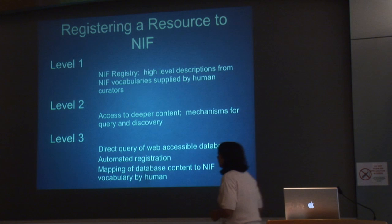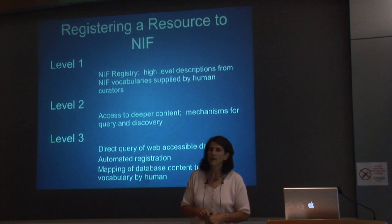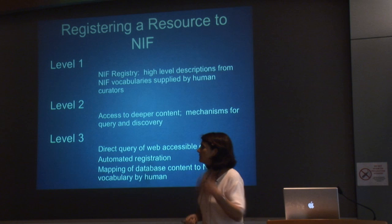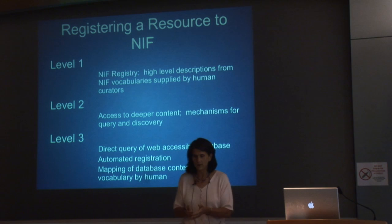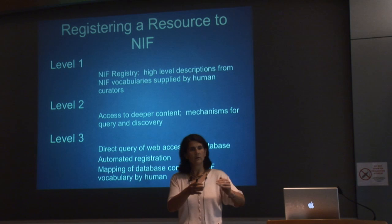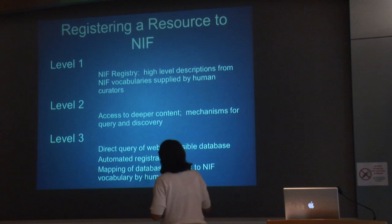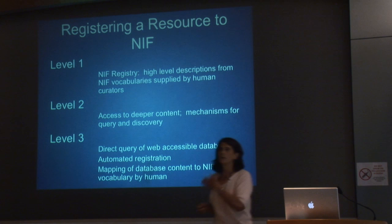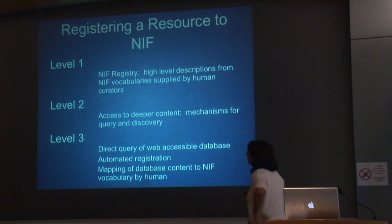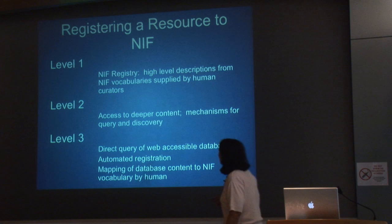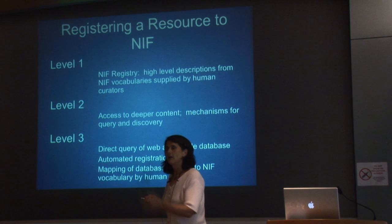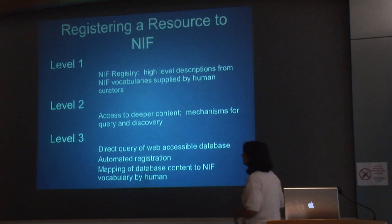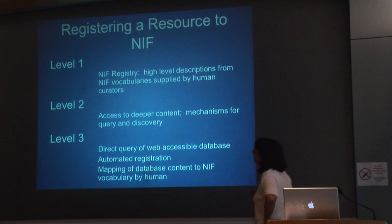One of the first things we did in NIF was define resource levels. At the very simplest—level one—a resource is encapsulated by the NIF registry. You tell us you have a software tool, where to find it, what it does, and who the contact person is. It's a very simple catalog. We have curators who actively go out and try to find these, but people can also come and nominate their own resource. We've developed a vocabulary for describing what these are because it helps to have a controlled vocabulary when looking for software, databases, and so on. However, it was very apparent that this level of characterization is not sufficient for actually finding most things—resources are very complicated entities.